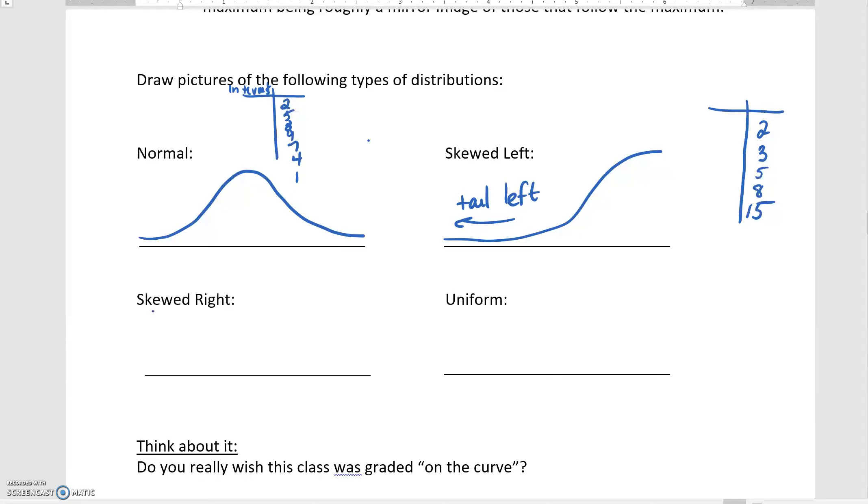Skewed right is going to start high and then go low, so the tail is going to the right. A table here could look like you have your bigger values first and then they go down. Uniform means it's really staying the same level the whole time, so our frequencies in a uniform distribution would all be the same number, whatever that is.